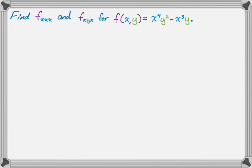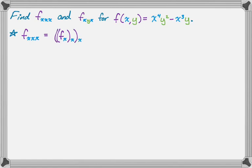I'm going to start with what it means to find partial x,x,x. So if I'm finding this, what I'm really going to do is find partial x — that's a new function — then for that function find partial x — another new function — and then for that function find partial x again. So I'm really just taking the derivative with respect to x three times, kind of like a third derivative.